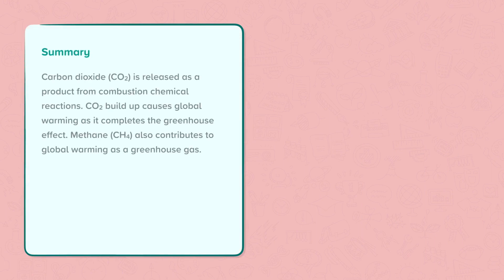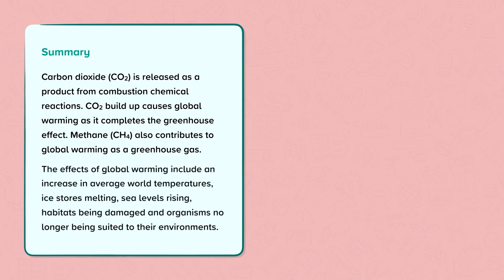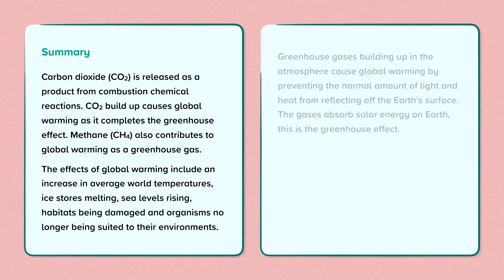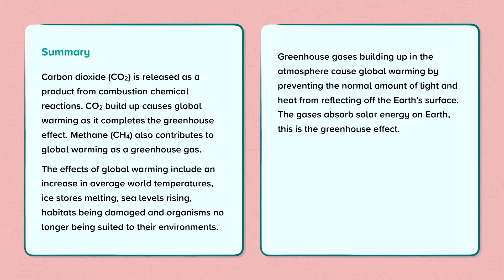In summary: carbon dioxide, CO2, is released as a product from combustion chemical reactions. CO2 builds up and causes global warming as it completes the greenhouse effect. Methane, CH4, also contributes to global warming as a greenhouse gas. The effects of global warming include an increase in average world temperatures, ice stores melting, sea levels rising, habitats being damaged, and organisms no longer being suited to their environments. Greenhouse gases building up in the atmosphere cause global warming by preventing the normal amount of light and heat from reflecting off of the Earth's surface — the gases absorb solar energy on Earth. This is the greenhouse effect.